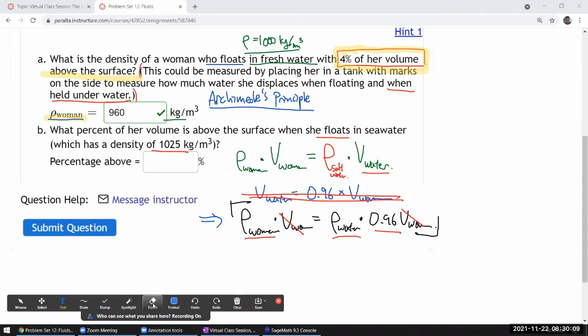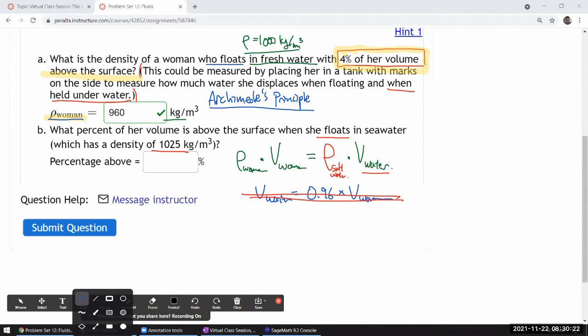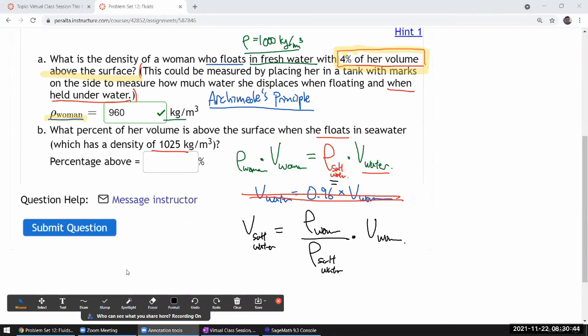So, just writing out the expression here. I can solve for the volume of the salt water by dividing both sides by density of salt water. So, the volume of salt water is the ratio of density of a woman per density of salt water times the volume of the woman.